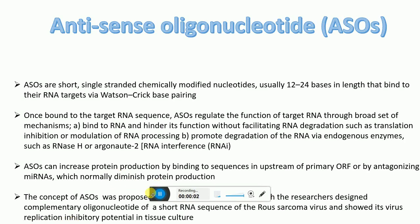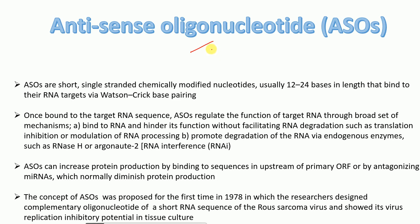In this video, I'm going to talk about what are antisense oligonucleotides, their mechanism of action, and give you an example of how they function in detail. Antisense oligonucleotides are 12 to 24 bases in length, chemically modified, single-stranded nucleotides that bind to their target RNA via Watson-Crick base pairing.